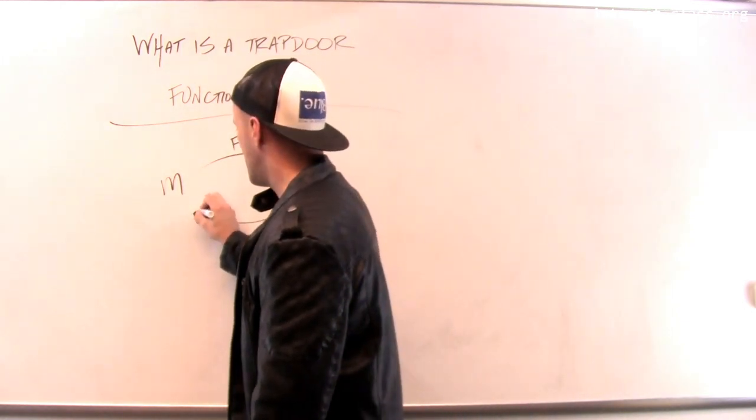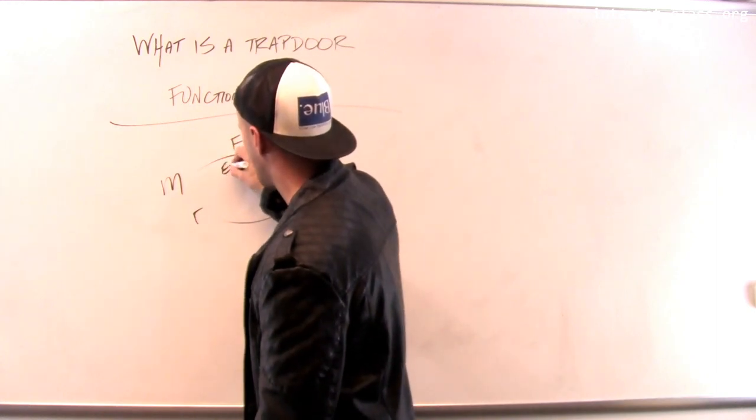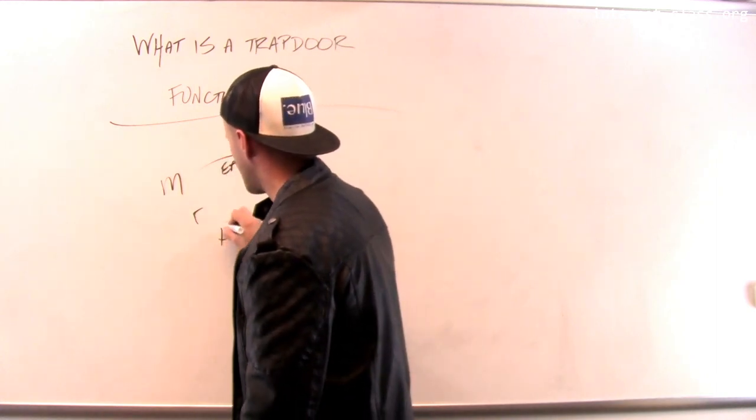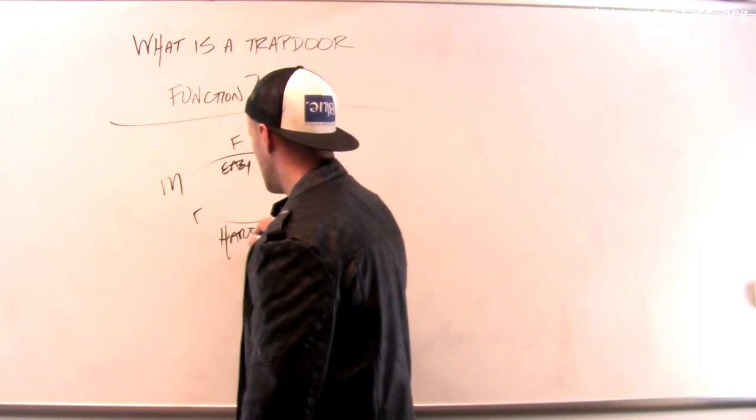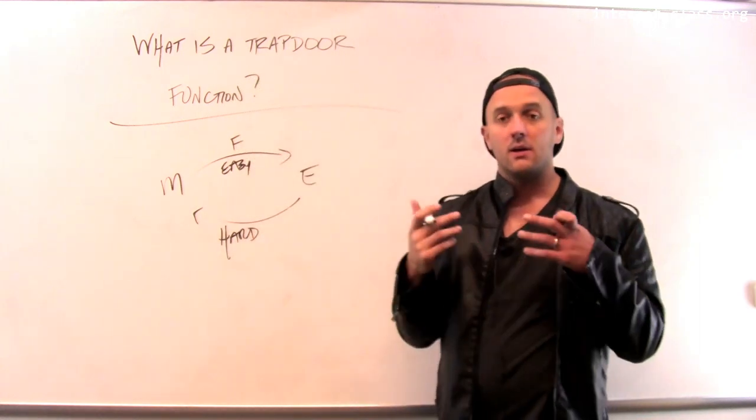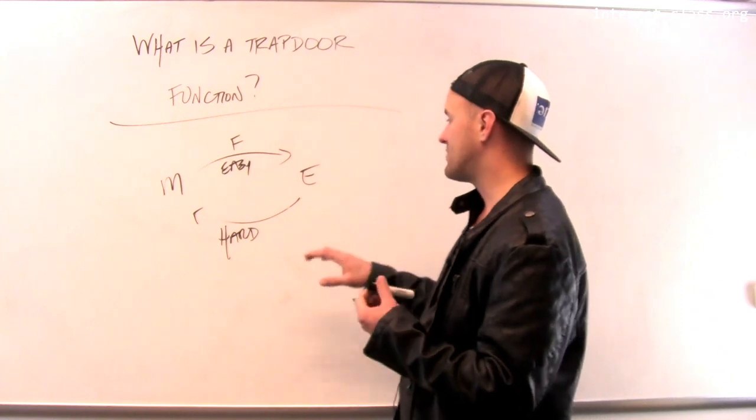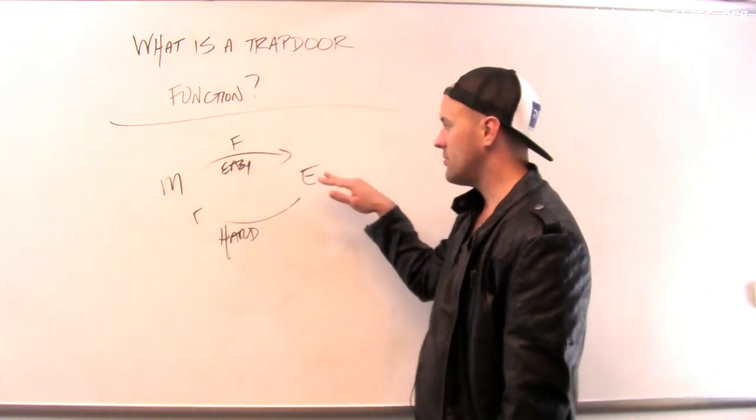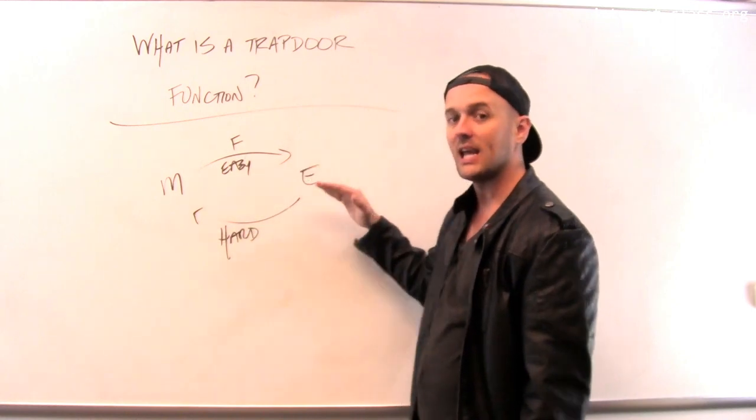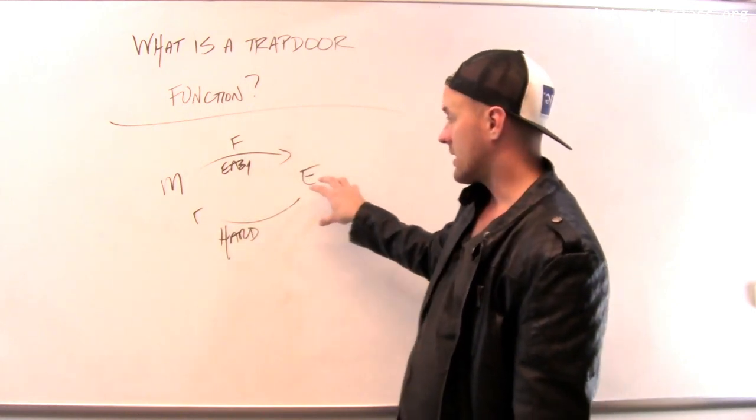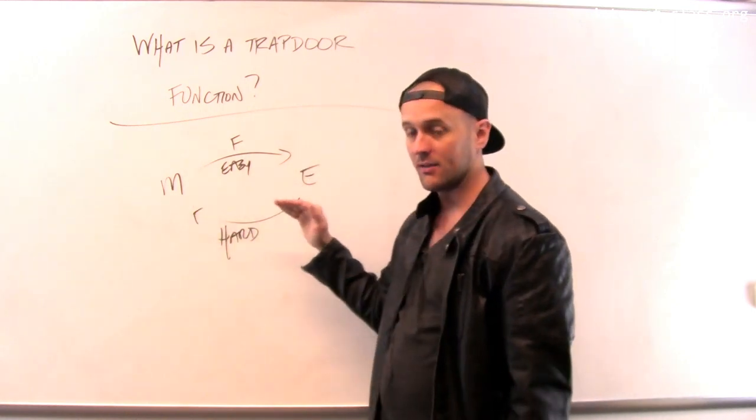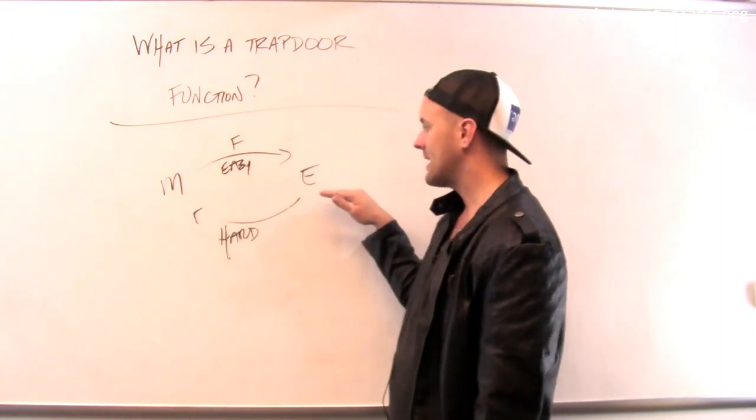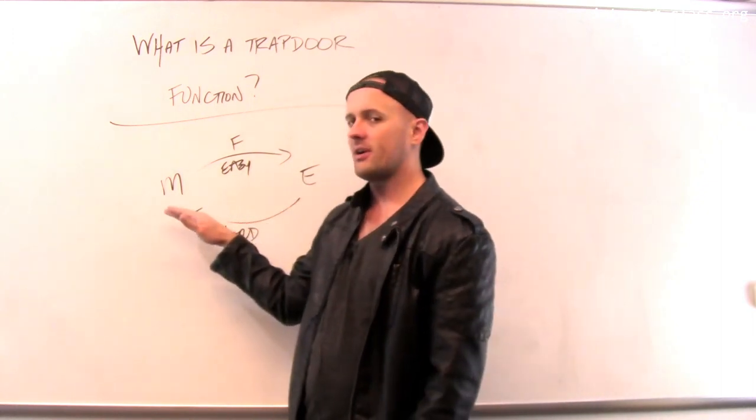So this is hard. This direction is easy. This direction is hard. And by hard, I mean hard in the complexity term. So for example, I might have to guess every possible value of M and compute F to figure out which one maps to E in order to compute M using E. So if I have M, it's very easy to get E. If I have E, it's very hard to get M.